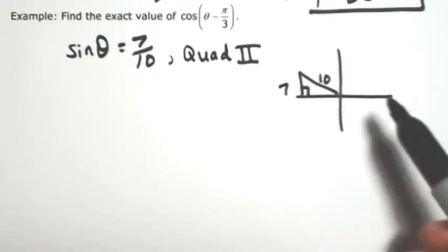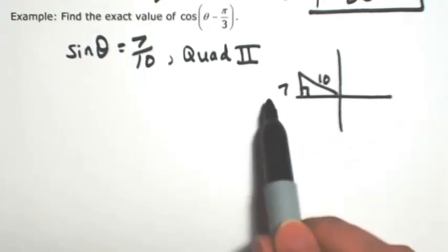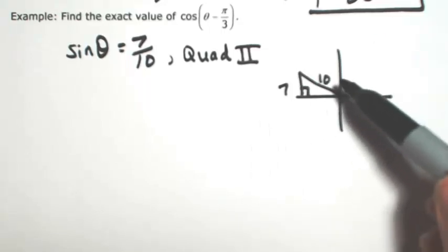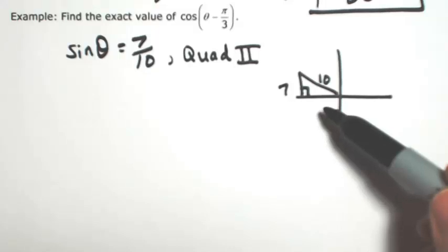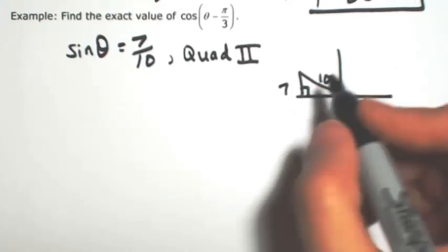So then the adjacent is going to end up being the hypotenuse squared minus one of the legs squared. So I'm going to have 100 minus 49. So this would be the square root of 51. And then since it's on the left side, this would be negative.